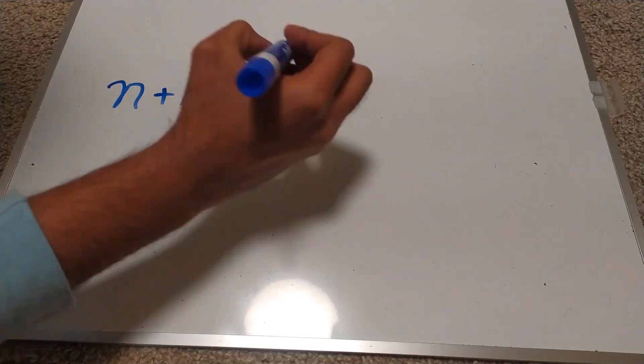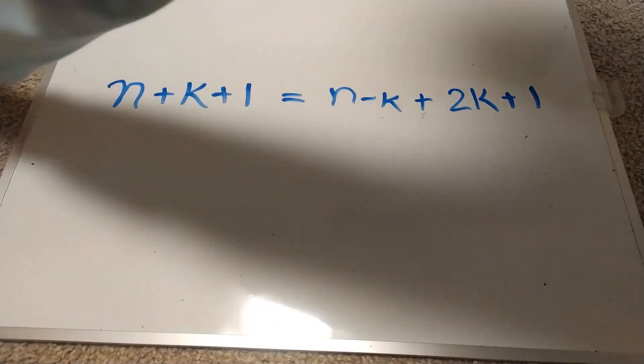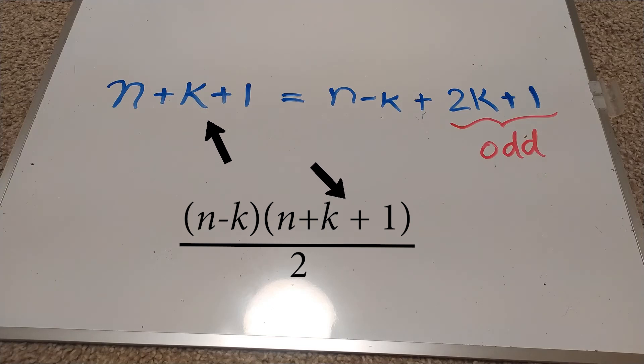Notice this thing that n plus k plus 1 is n minus k plus 2k plus 1, right? As 2k plus 1 is always an odd number, one factor in the numerator is always an odd number more than the other. So, if one factor is even, the other factor is odd and vice versa.